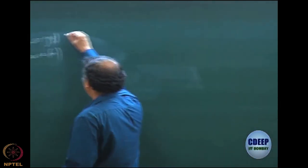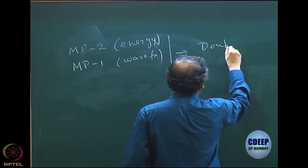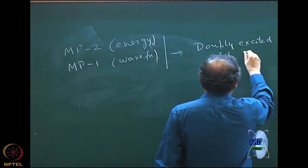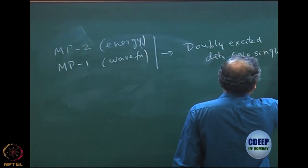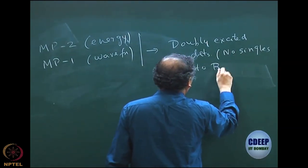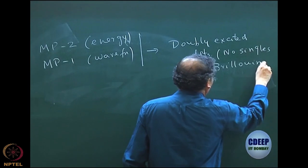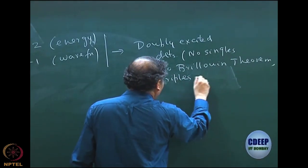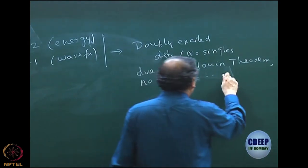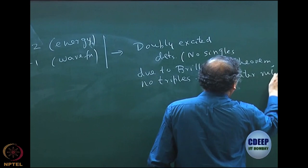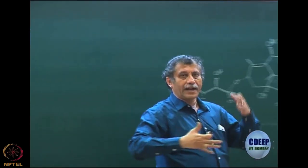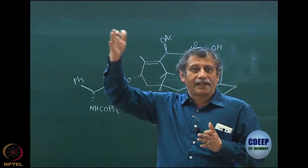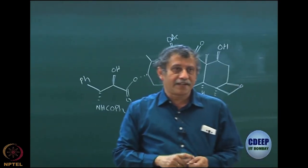When we analyze these two, we see that the contribution comes from only doubly excited determinants. No singles due to Brillouin's theorem, and of course no triples — and quadruples and so on — because of Slater rules. Slater rules do not allow V to connect from Hartree-Fock to triply excited, because we have only one matrix element: Hartree-Fock, V, excited determinants, and back to Hartree-Fock. So only doubly excited determinants contribute.